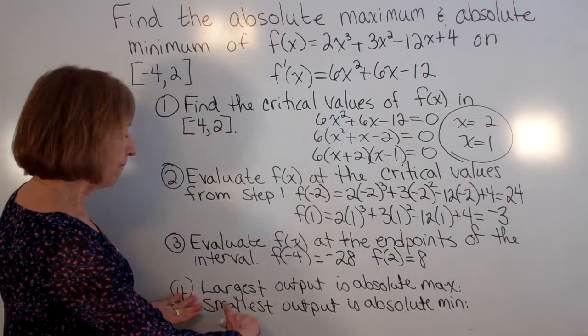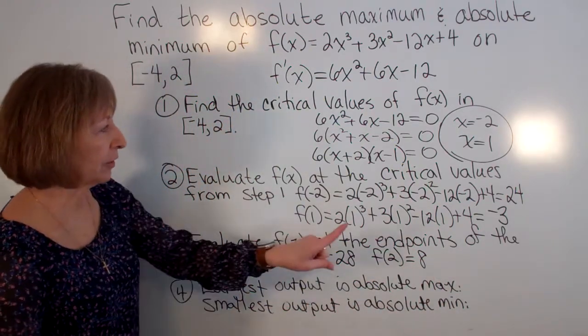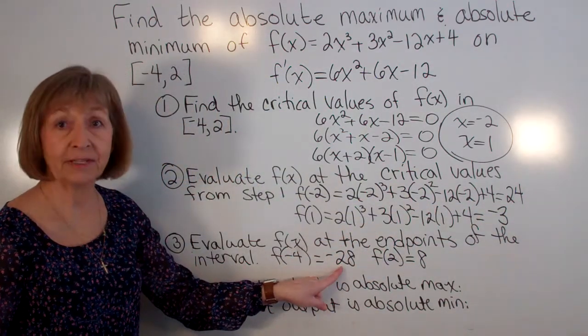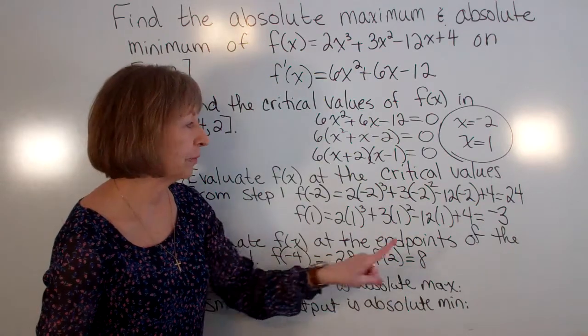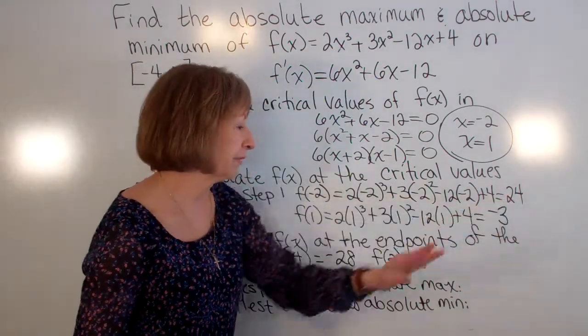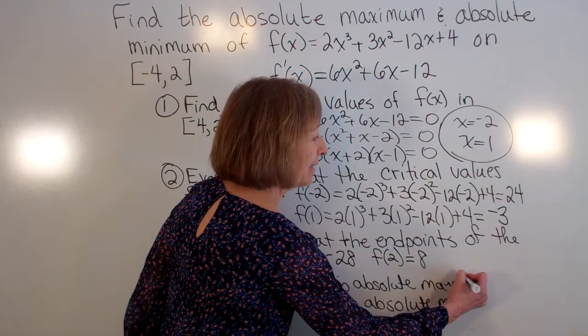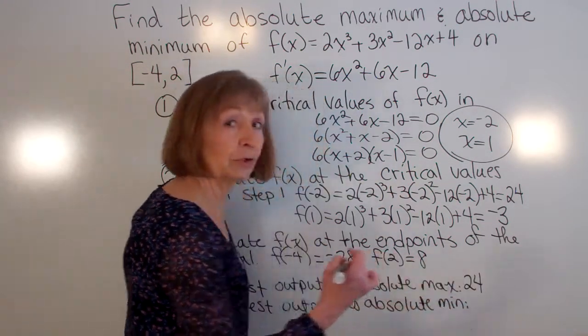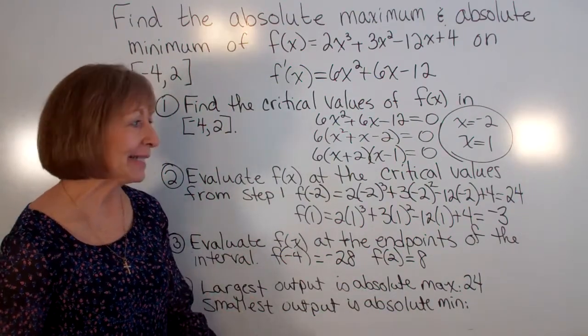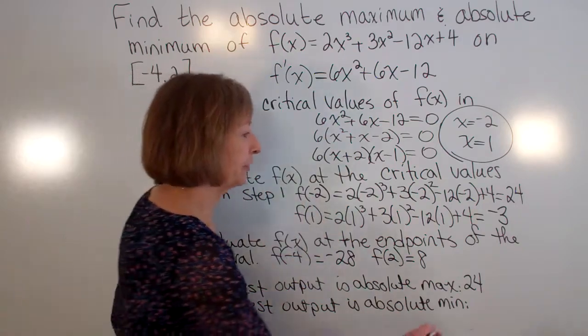Okay now step 4, the largest output. So I look at all these outputs. I have an output of 24, an output of -3, an output of -28, and an output of 8. Of all of those, the biggest output is 24. So my absolute max is 24. So your output is your absolute maximum value. It happens at the x value of -2.